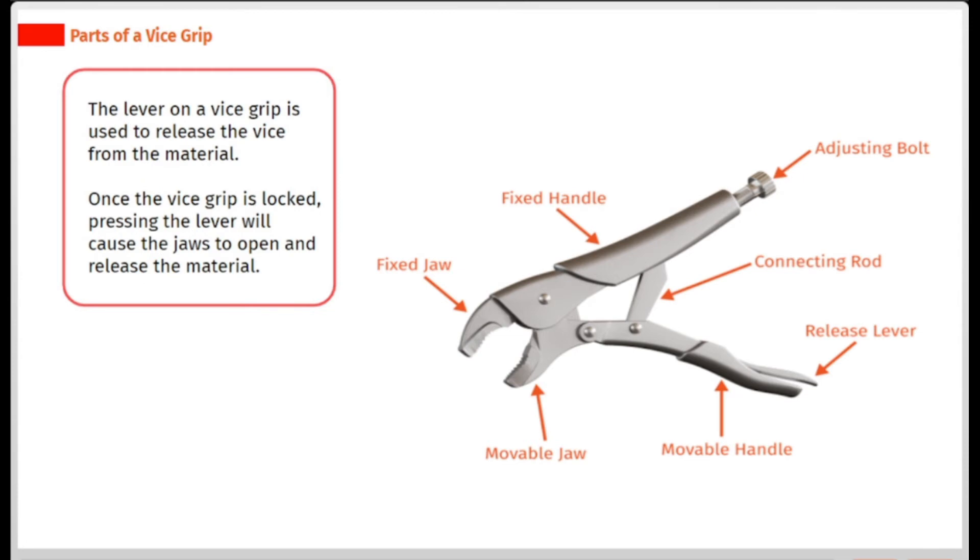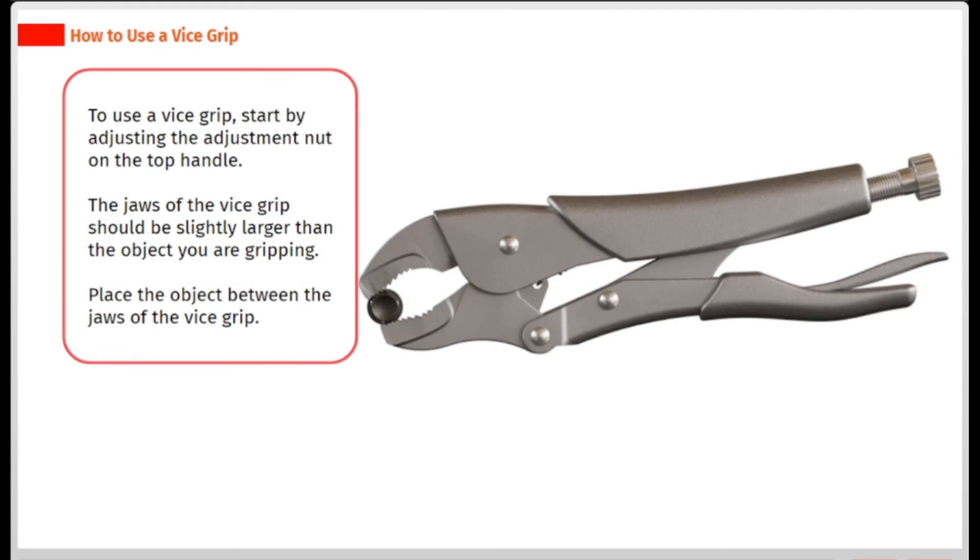The lever on a vice grip is used to release the vice from the material. Once the vice grip is locked, pressing the lever will cause the jaws to open and release the material.